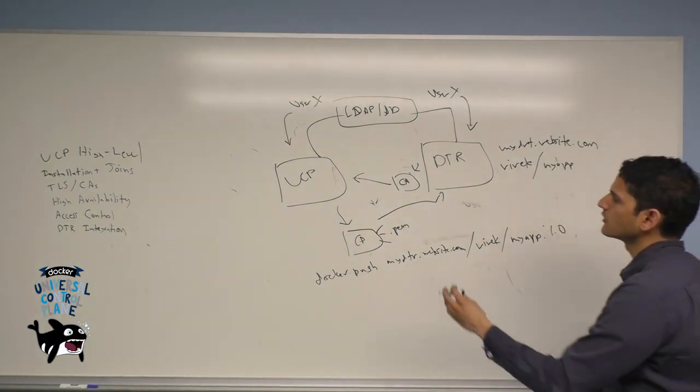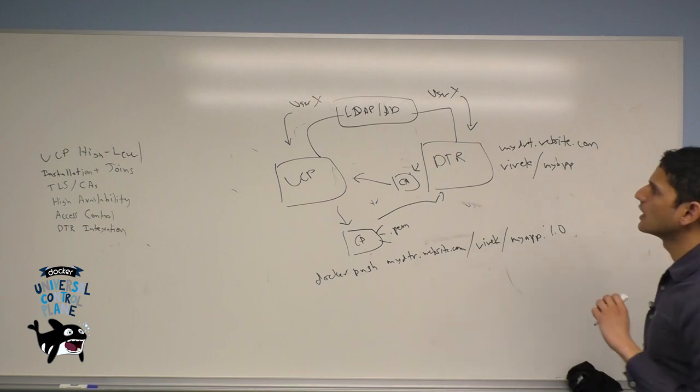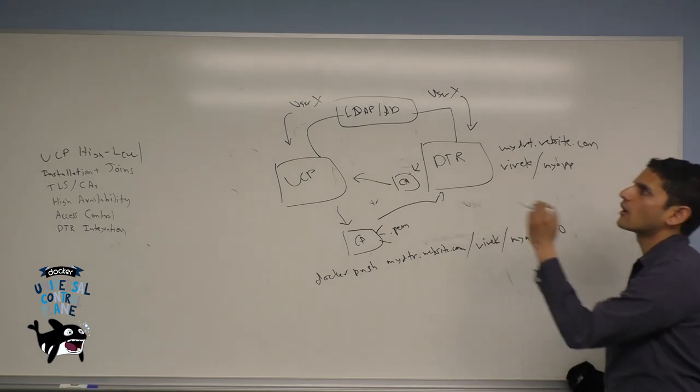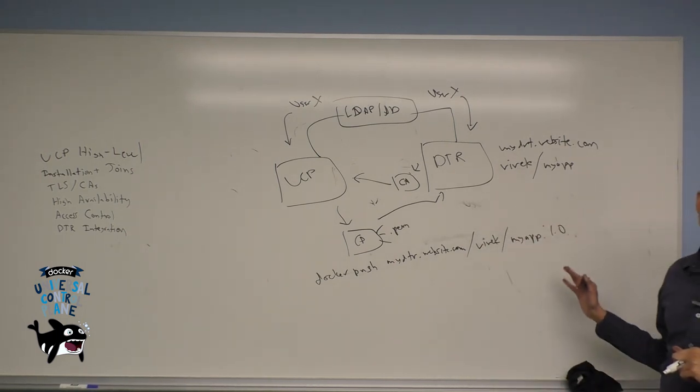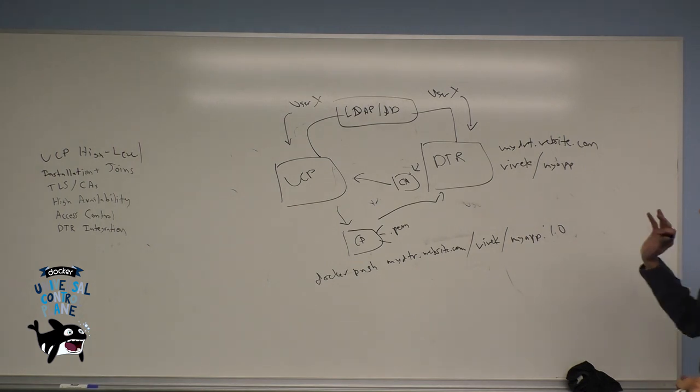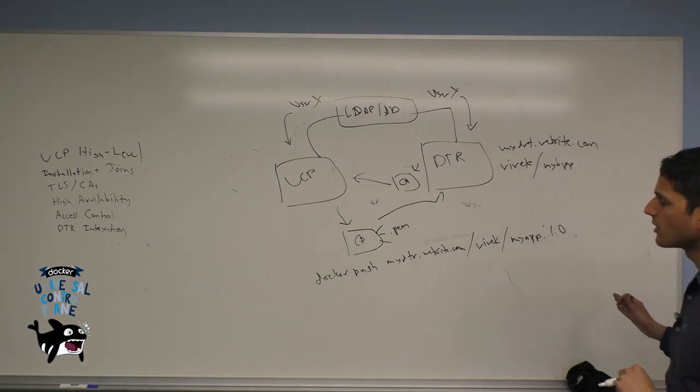When I do this docker push, this will allow me to bring the image from UCP into DTR. Since I've already gotten UCP and DTR to trust each other and I already have my users authenticated across the backend,